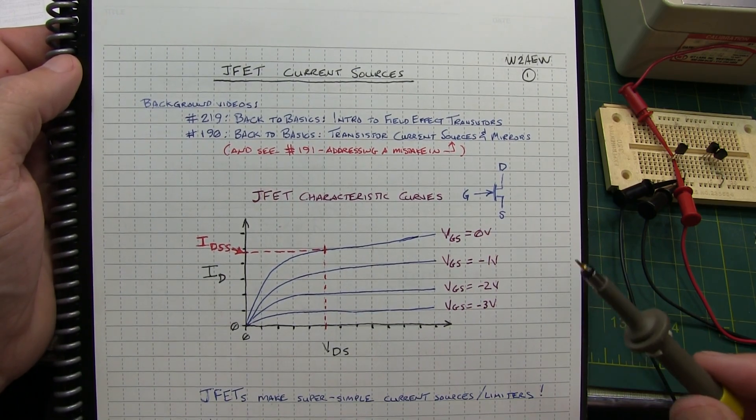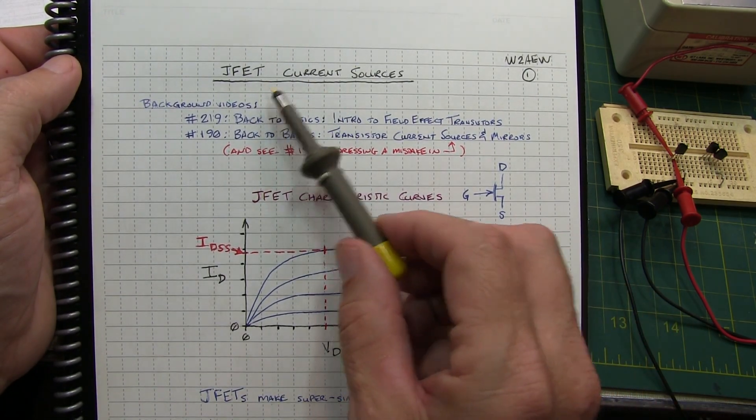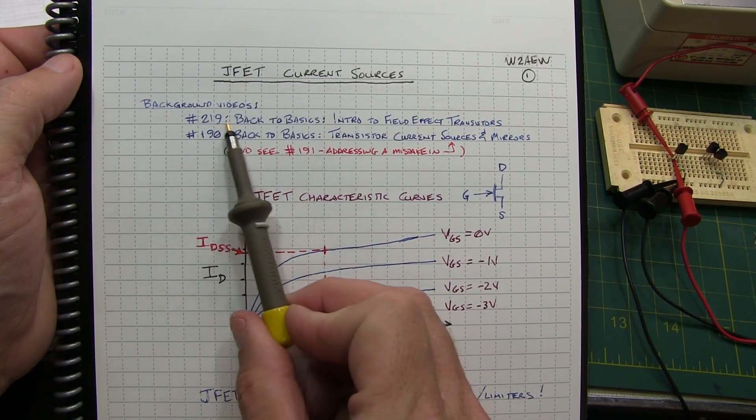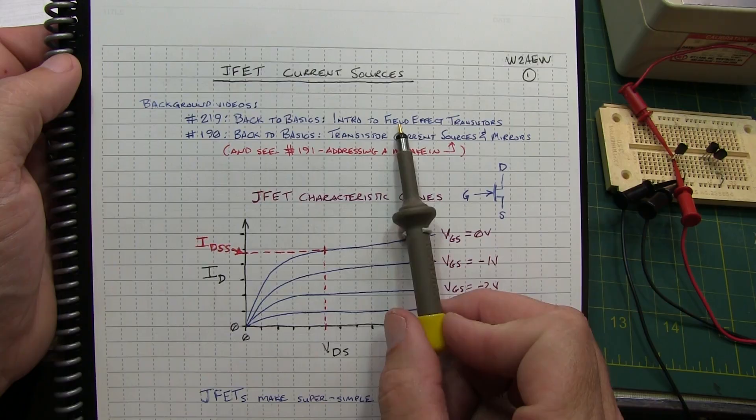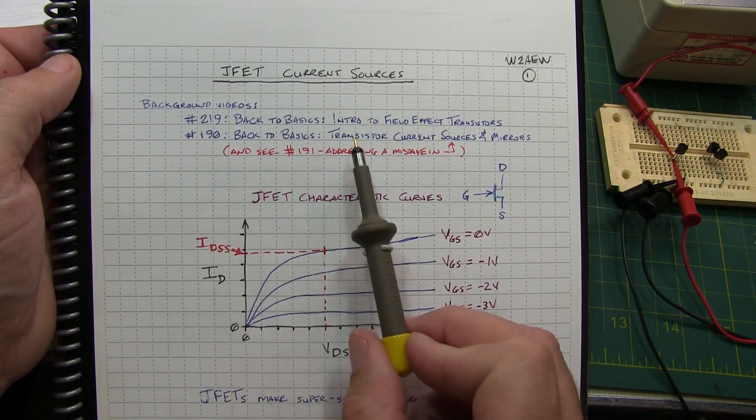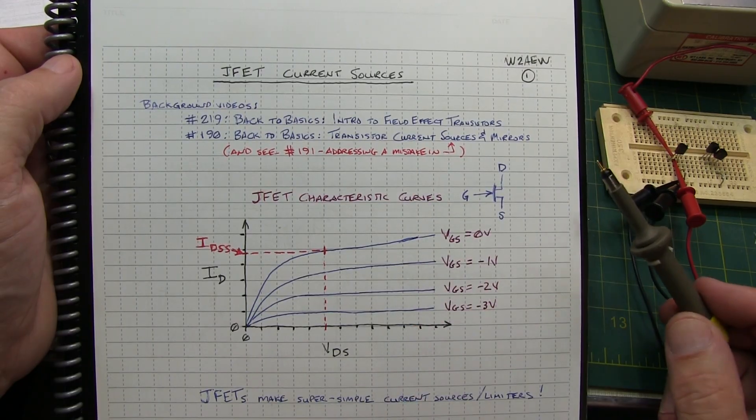Today's video is a bit of an overdue topic. We're going to talk about JFET current sources. For background, you may want to take a look at our intro to field effect transistors, as well as the video I did several years ago on transistor current sources and mirrors.